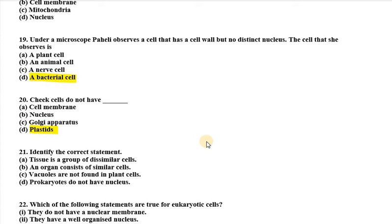Twenty-first question: identify the correct statement about cells. A tissue is a group of dissimilar cells; an organ consists of similar cells; vacuoles are not found in plant cells; prokaryotes do not have a nucleus. The right option is D — prokaryotes do not have a nucleus.